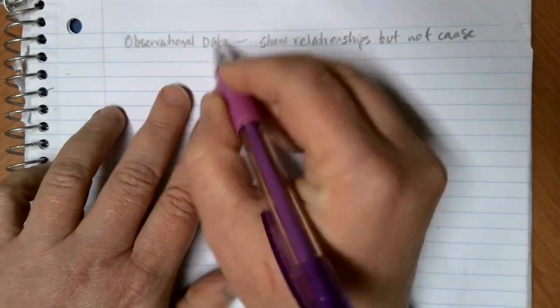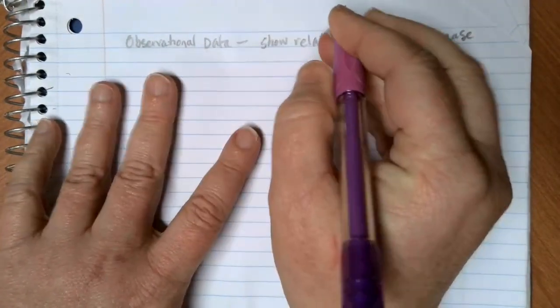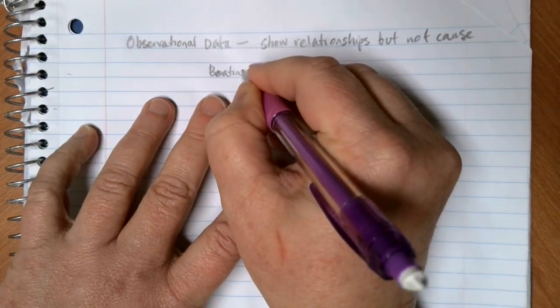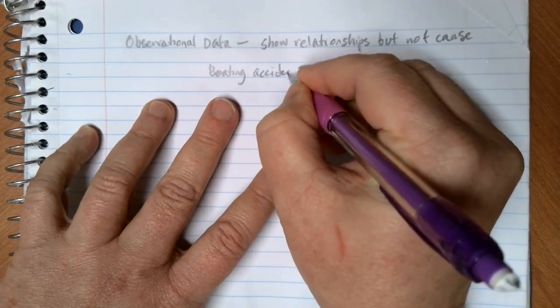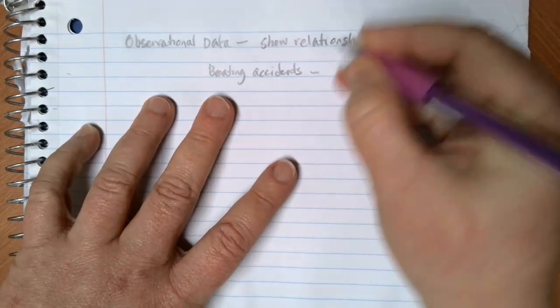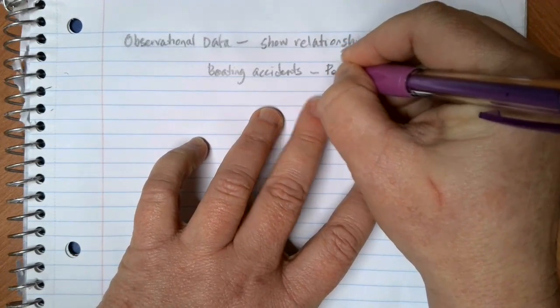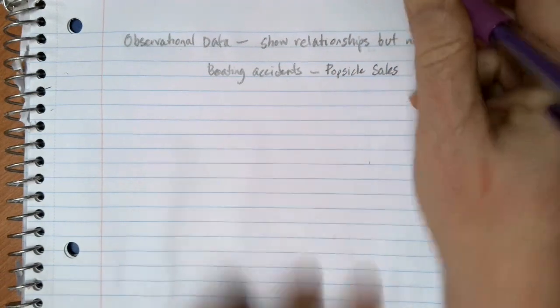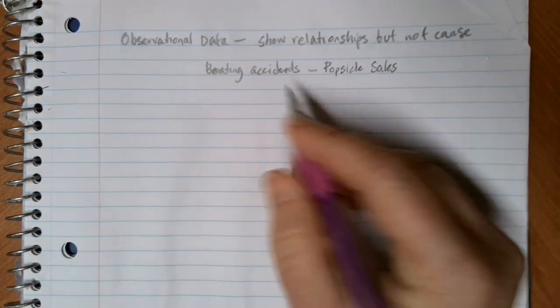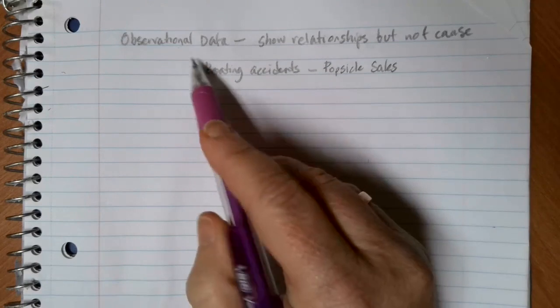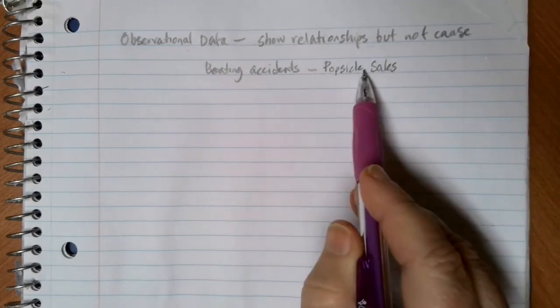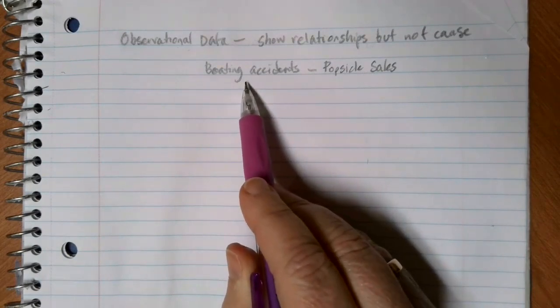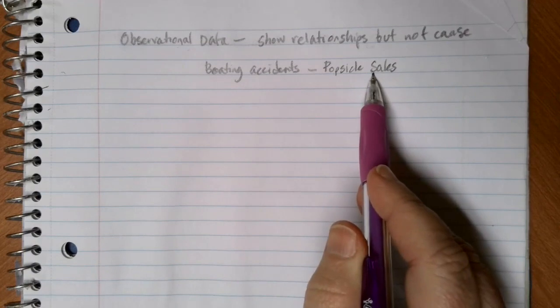As a kind of silly example here, let's suppose that we're recording and we find that the number of boating accidents and the number of popsicle sales both go up at similar times. And so one of the problems with observational data is this would mean that increased popsicle sales are going to lead to increased boating accidents or increased boating accidents are going to lead to increased popsicle sales.